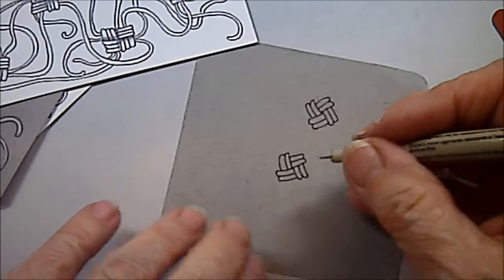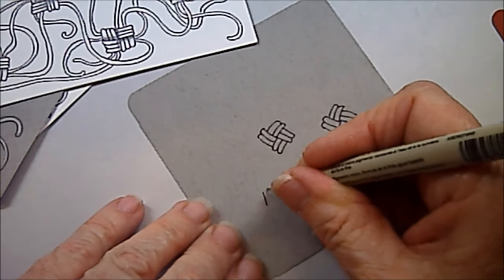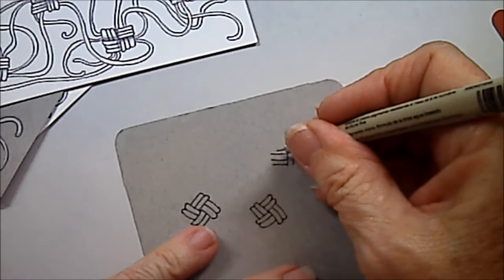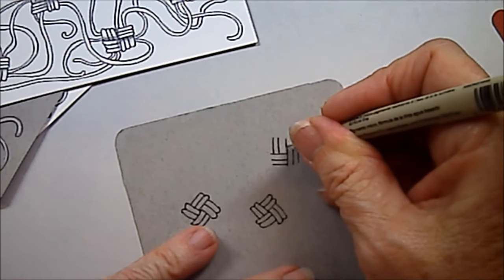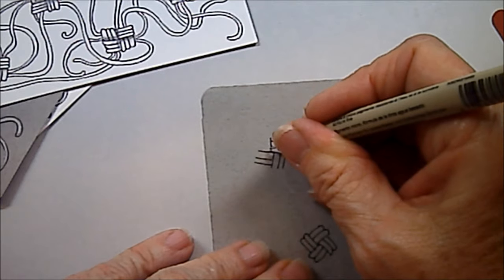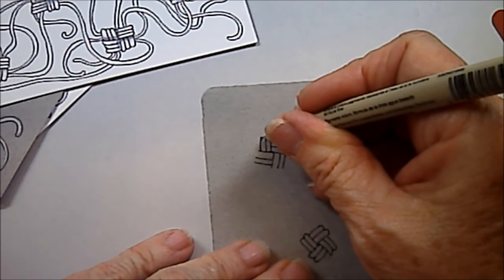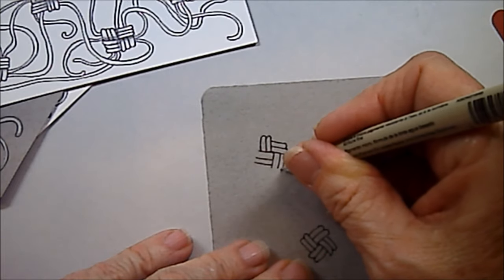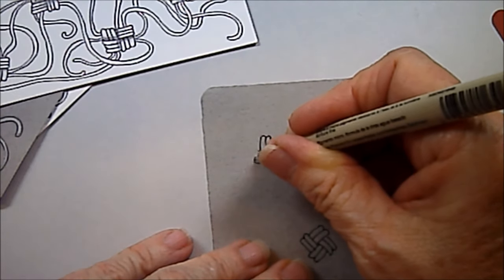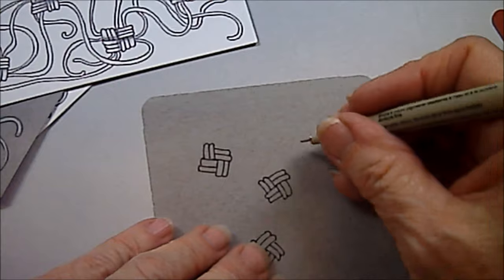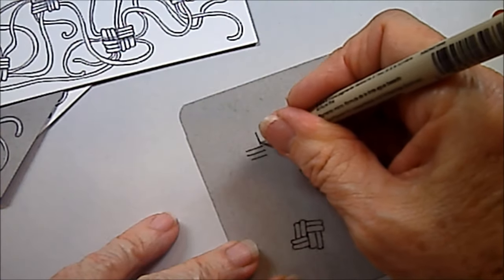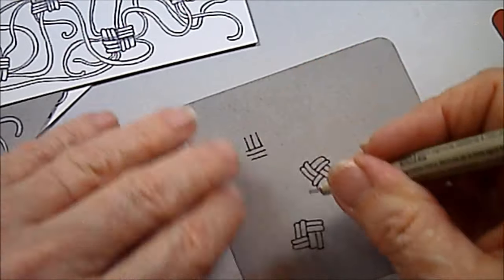So we're just going to randomly put these little knots on our paper. And then I'll do a couple more. Three lines. Three lines.